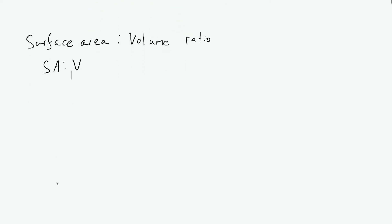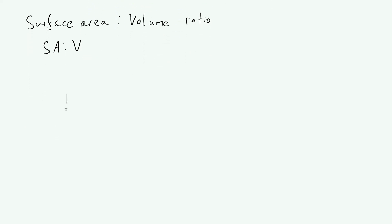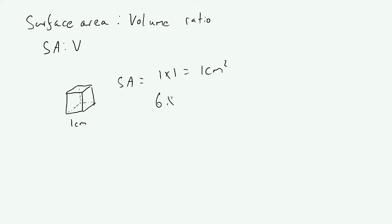The easiest way to look at it is by thinking of a simple cube. If I draw a cube — let's pretend this is a perfect cube in 3D — we can calculate both the surface area and the volume. Let's say each side is one centimetre in length. The surface area: each side has the same area and there are six of them. Each side is one times one, which equals one centimetre squared, and we have six of them. So six times one equals six centimetre squared in total — six faces times one centimetre squared for each face.